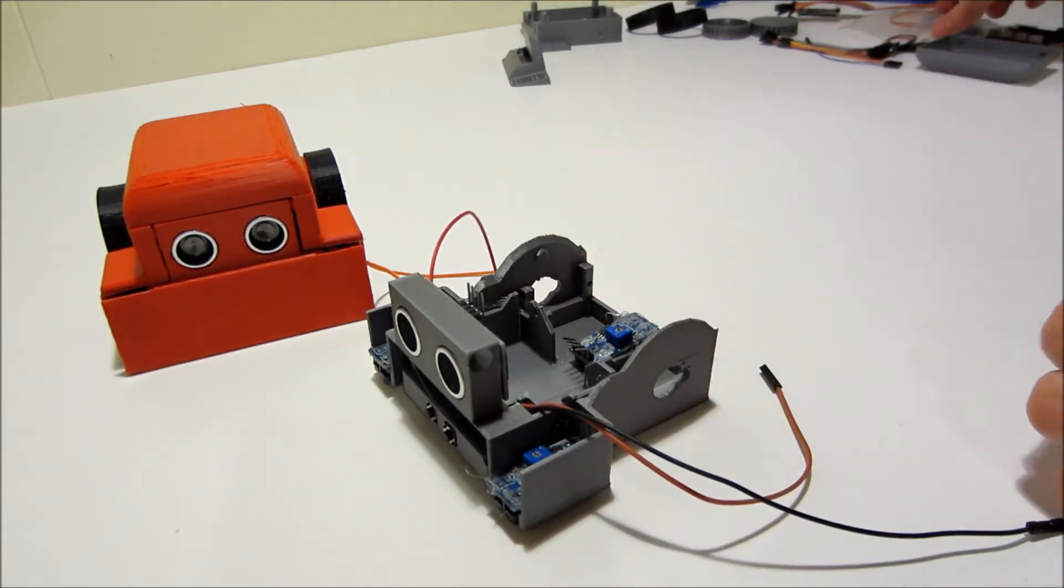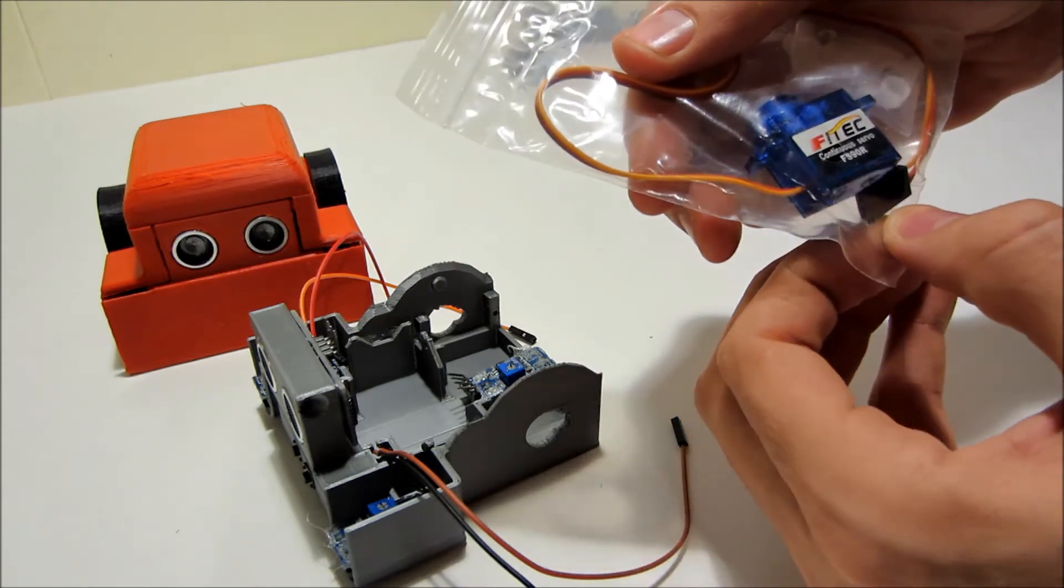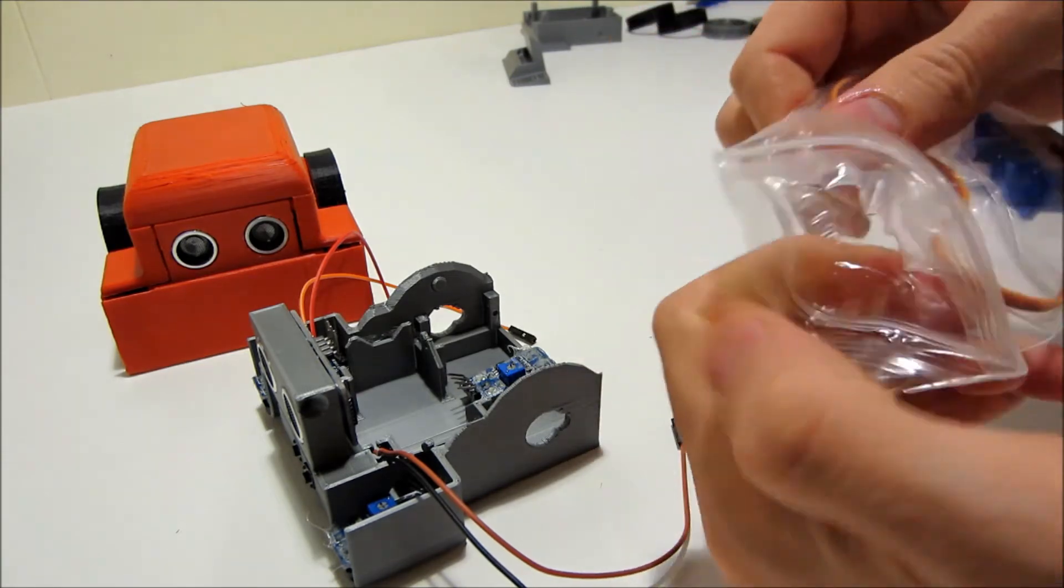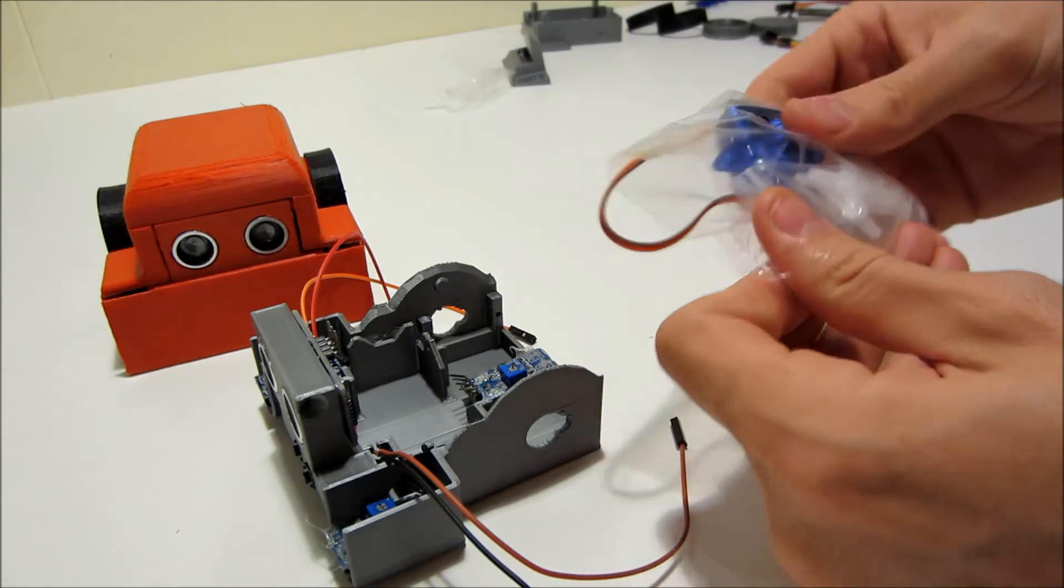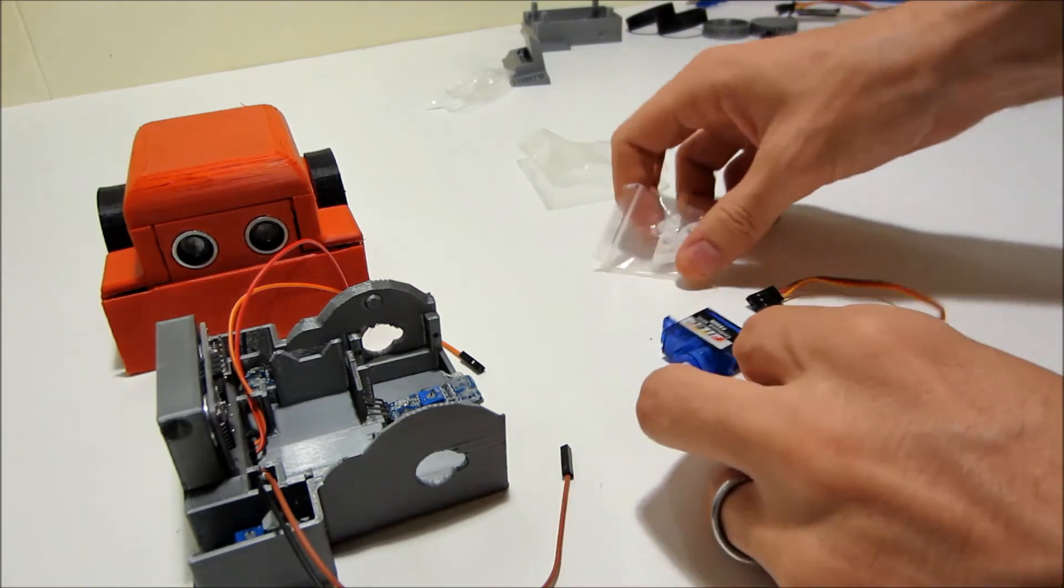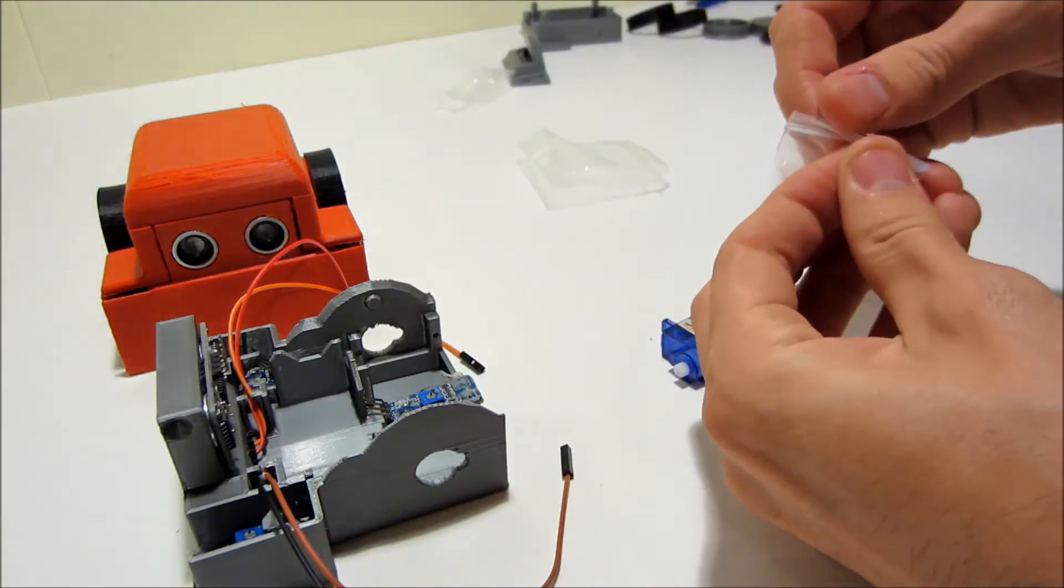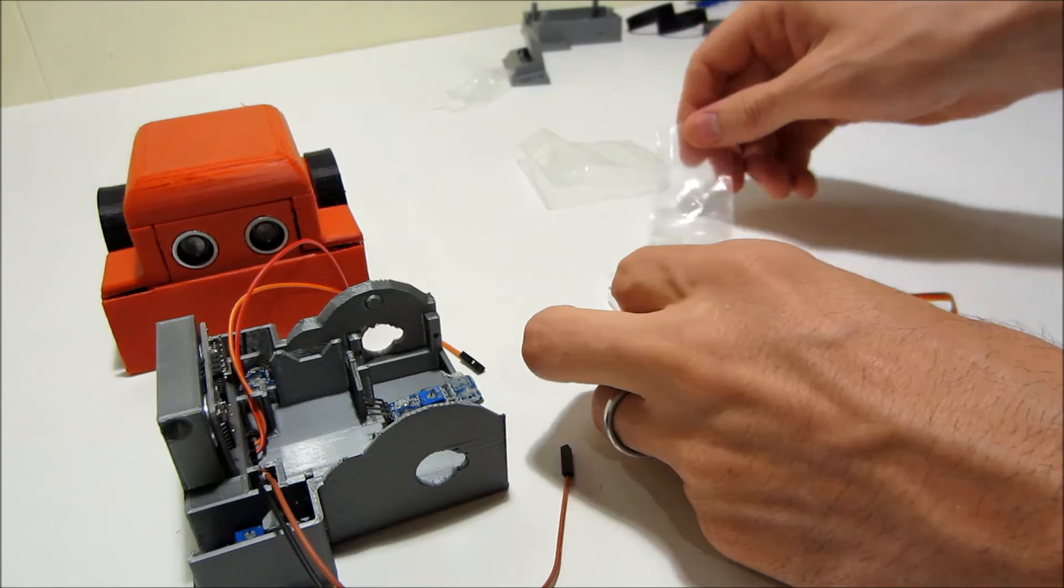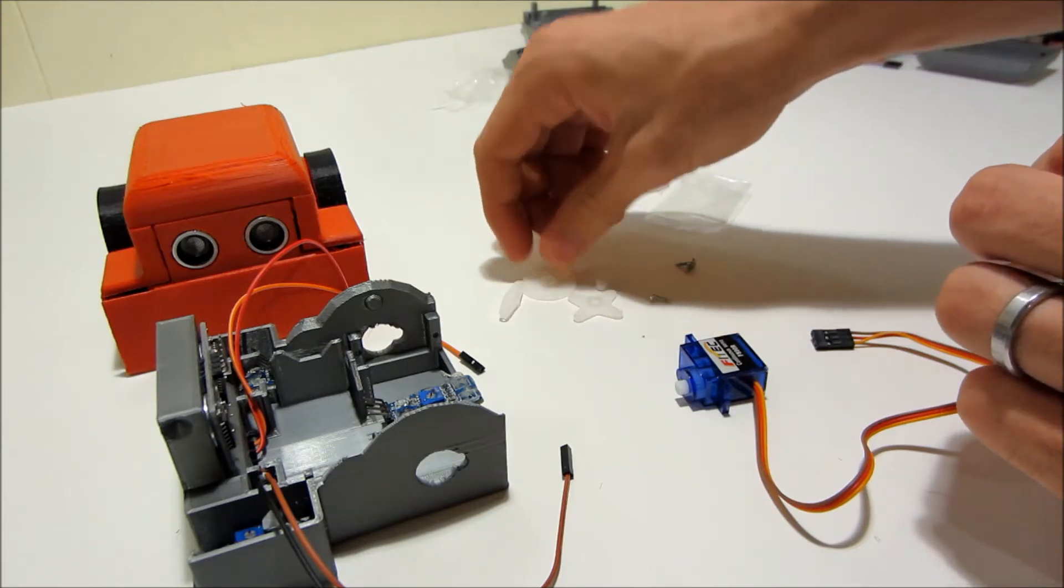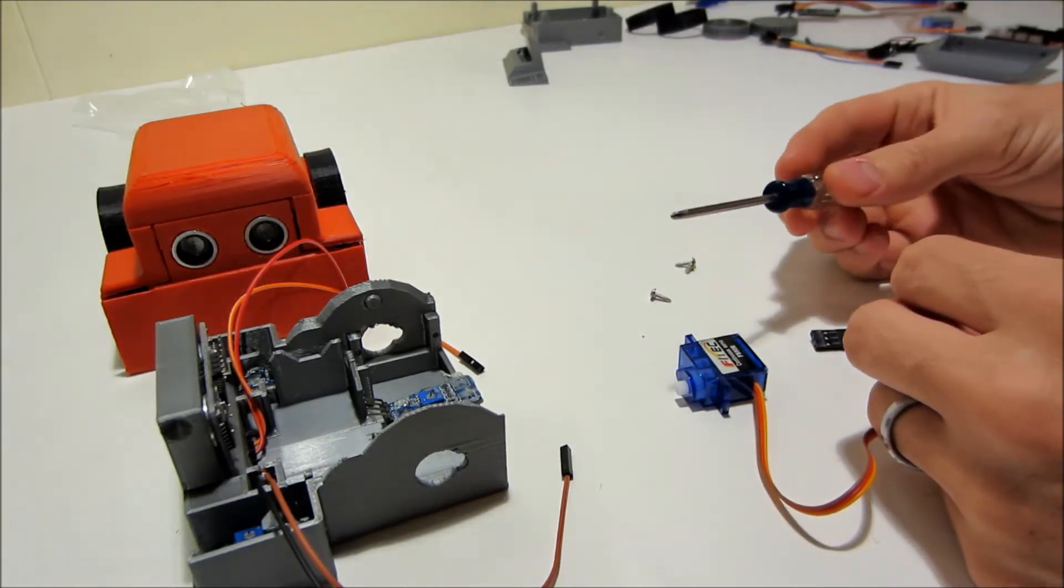The next thing we can do is install the little wheel motors, FS90R continuous servos. So in the package you get the servo motor and you get this little thing with three screws in it and these little extra fittings. We're going to make use of the screws in a way not intended and we don't need any of the little plastic fittings. So we'll set that aside and pull up our little tiny screwdriver.